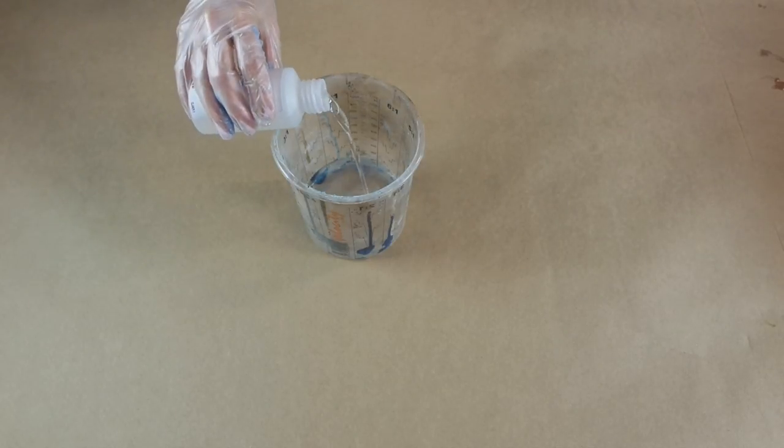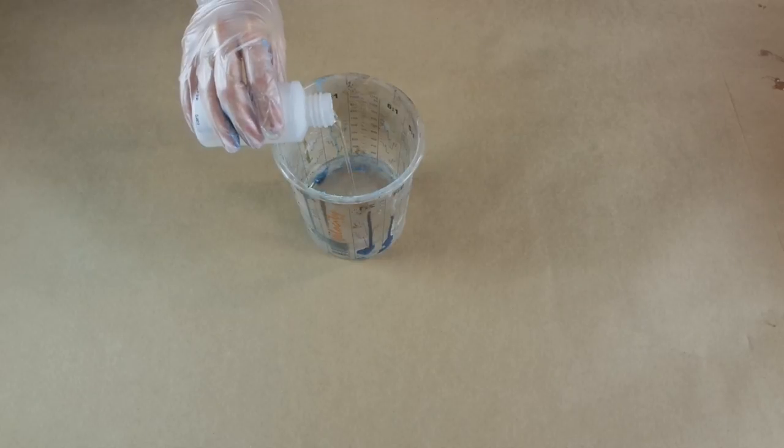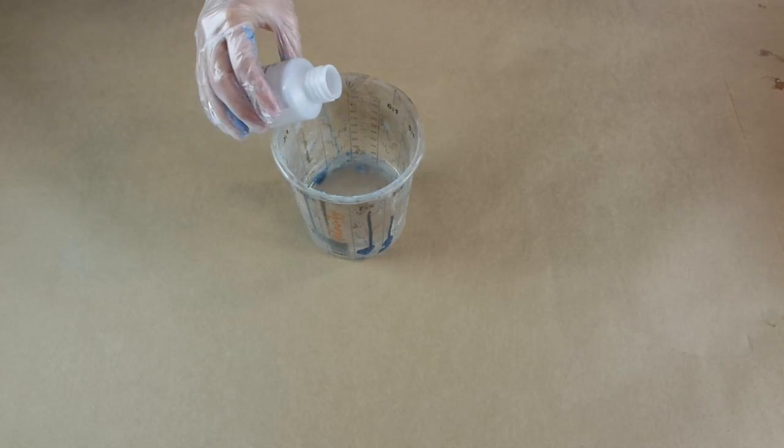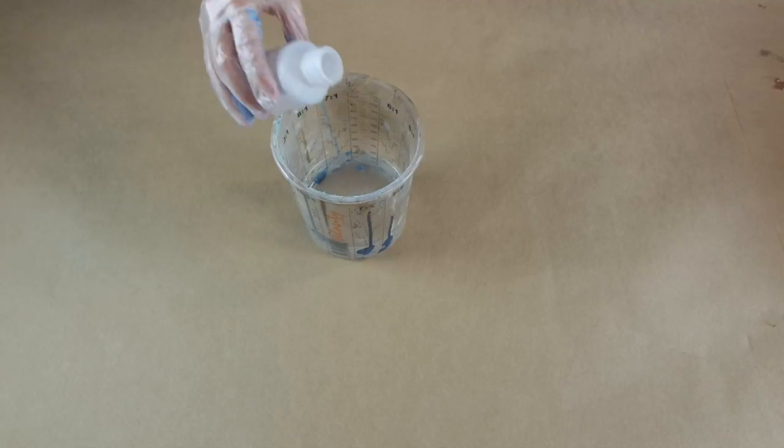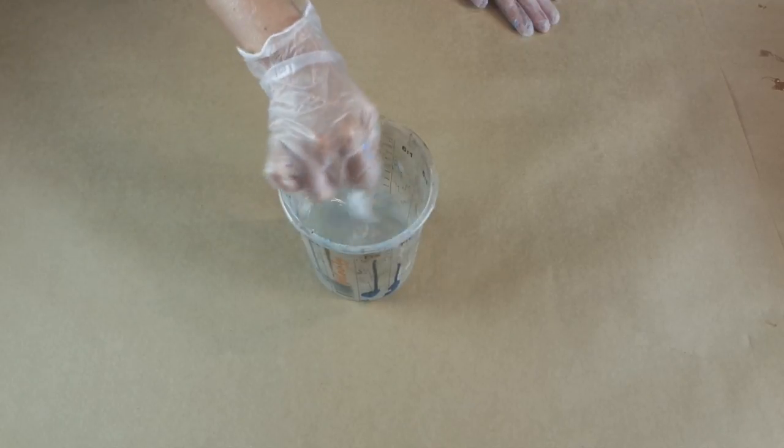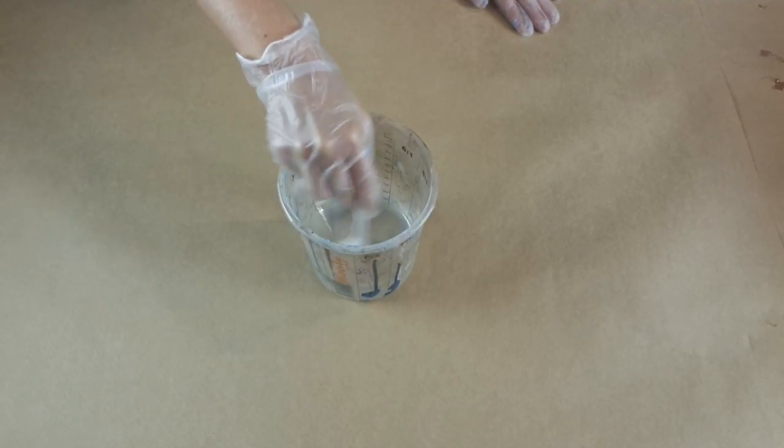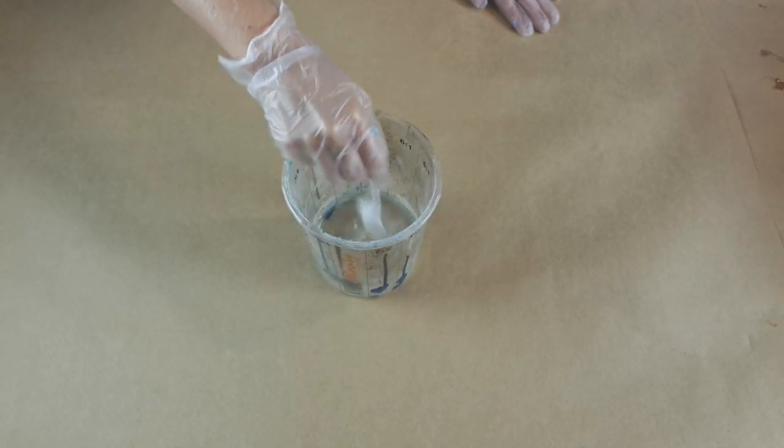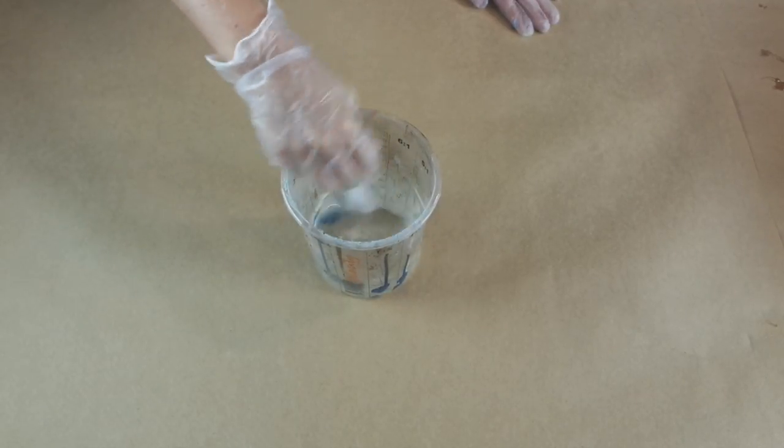Now this resin you mix 2 to 1 ratio. So I'm just measuring that out now and my mold takes around 250ml of resin. So I've just worked out the measurements and then the second part was quite liquidy. So it was very different to the normal resin I normally use. But I made sure I mixed it in thoroughly so that way both part A and B were combined.